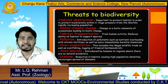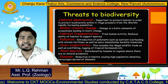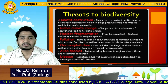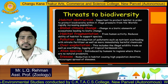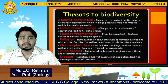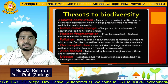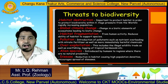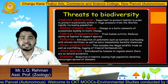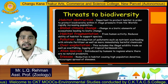Habitat fragmentation occurs due to human activity and reduces the ability of habitat to support species of organisms. Next is pollution — introduction of pollutants such as nutrient overloading with nitrate fertilizers, as well as more immediately harmful chemicals, leads to pollution, which is a major threat to biodiversity.